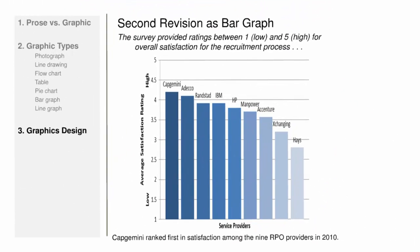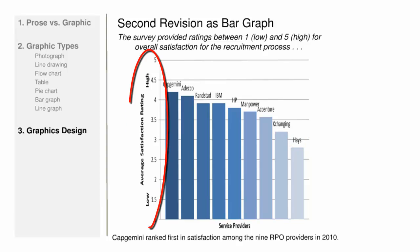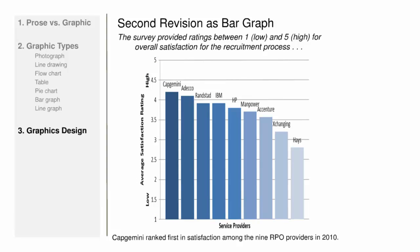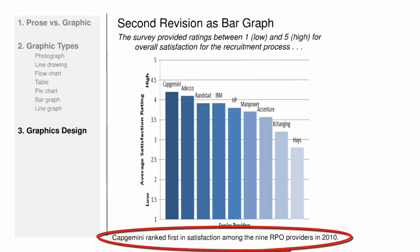The second revision presents the survey results in the form of a bar graph. Readers can now perceive the data more globally, with the difference in values for each company shown visually. The third aspect of developing graphic content is designing the graphic. It's important to label units with words. Note that this bar graph has labels for both axes. The horizontal is service providers, with a label for the specific provider at the top of each bar. The vertical axis is average satisfaction rating, with low and high as well as numerical labels. The writer has also provided a caption below the graphic so that readers know how to interpret its meaning.